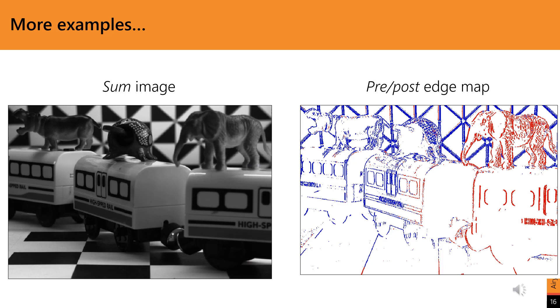Our final scene consists of various figurines on a toy train. The focus is roughly in the middle of the second car. The animal figurines contain more complex edge orientations and our method is able to produce a pre-post edge map for all edges that have a non-zero vertical component.